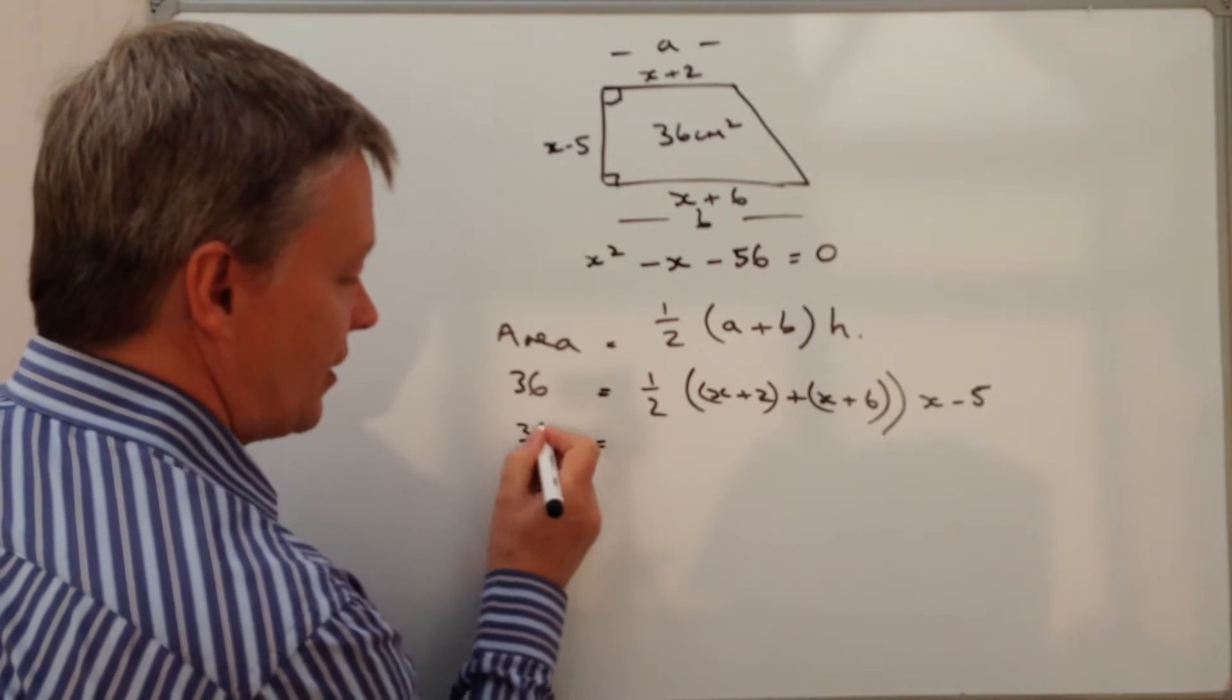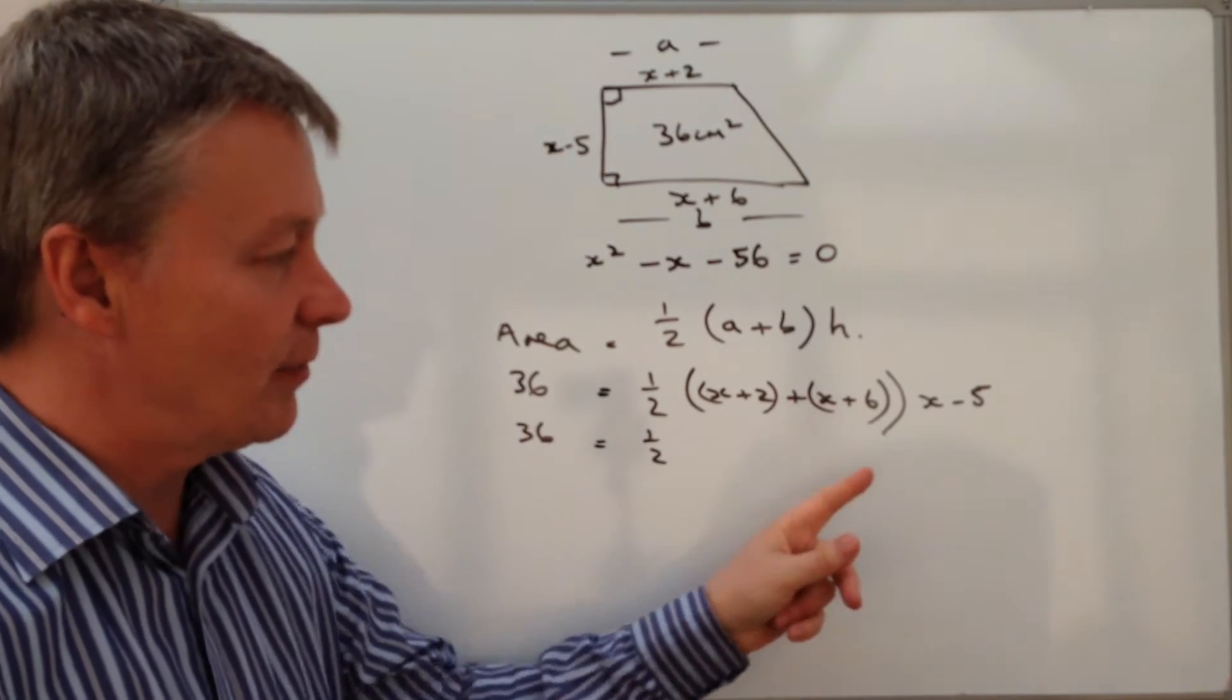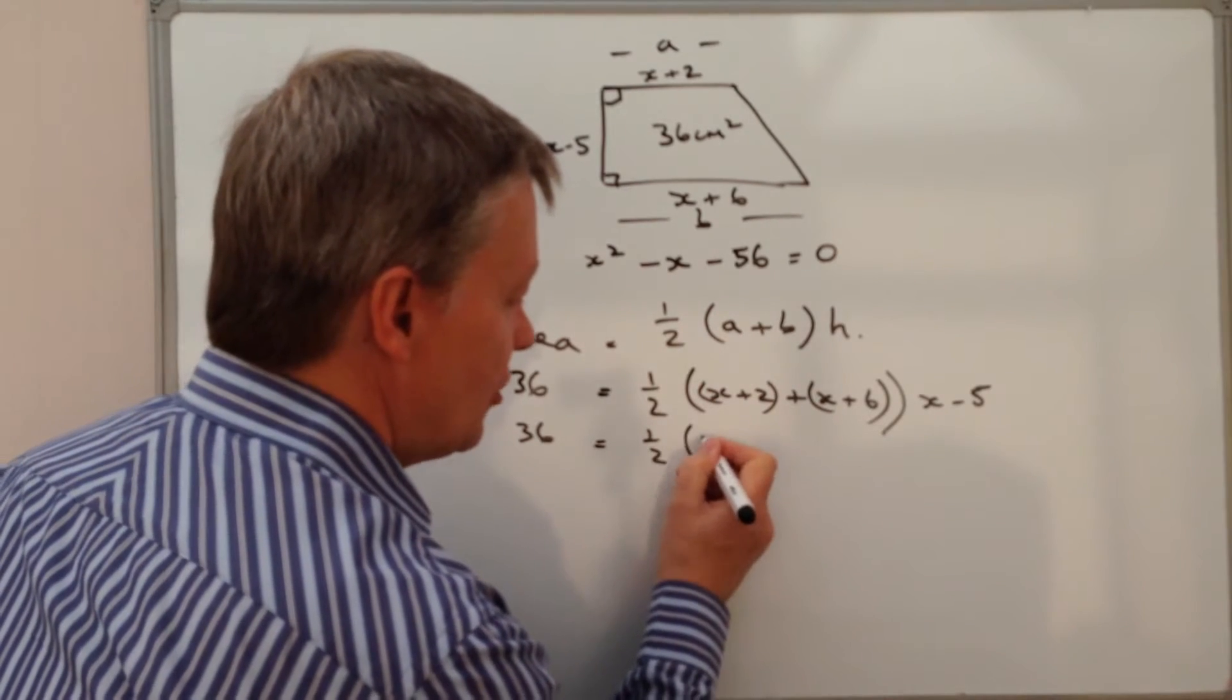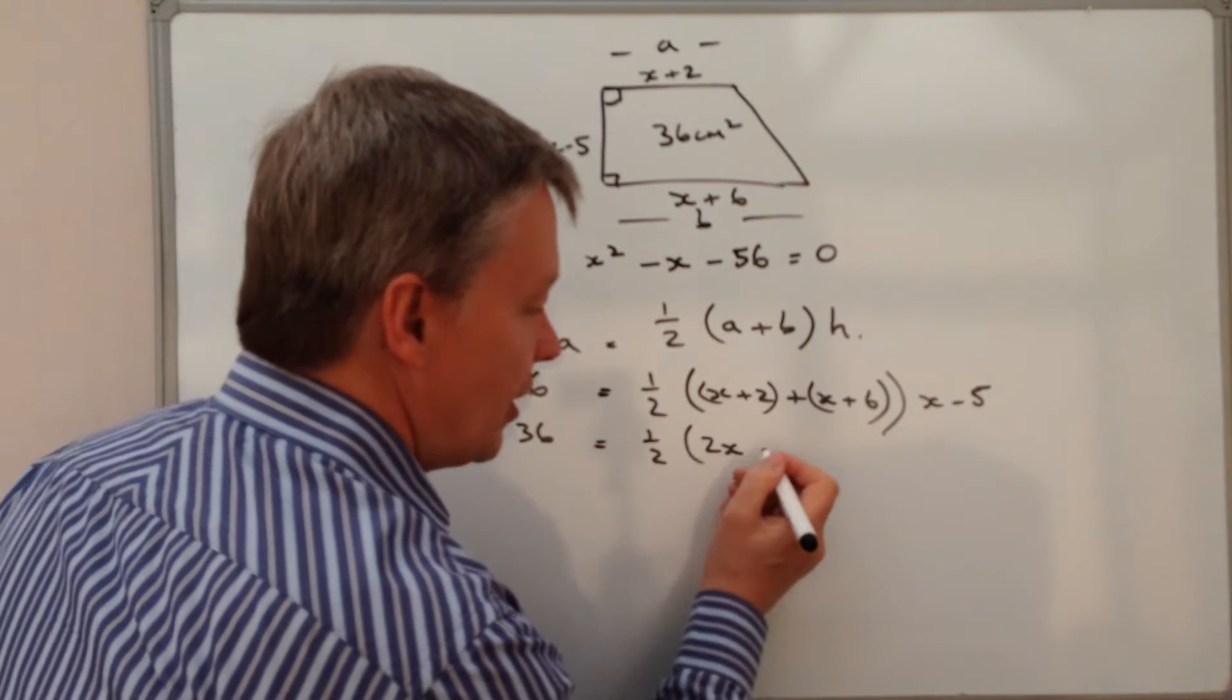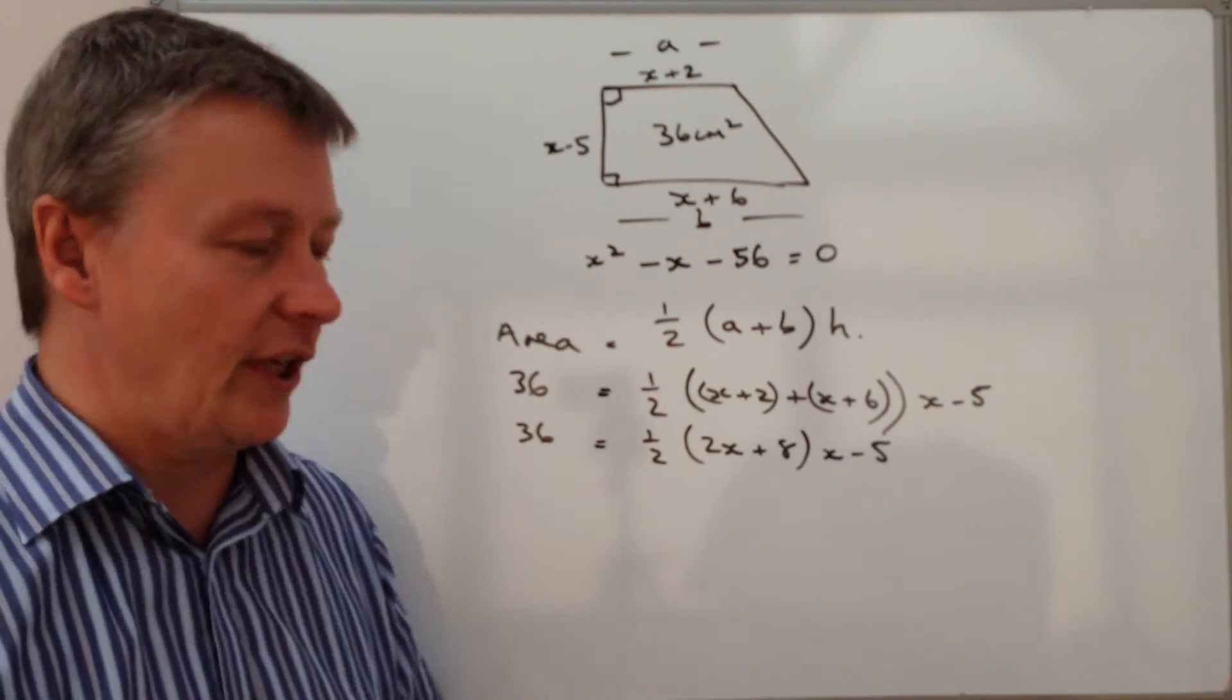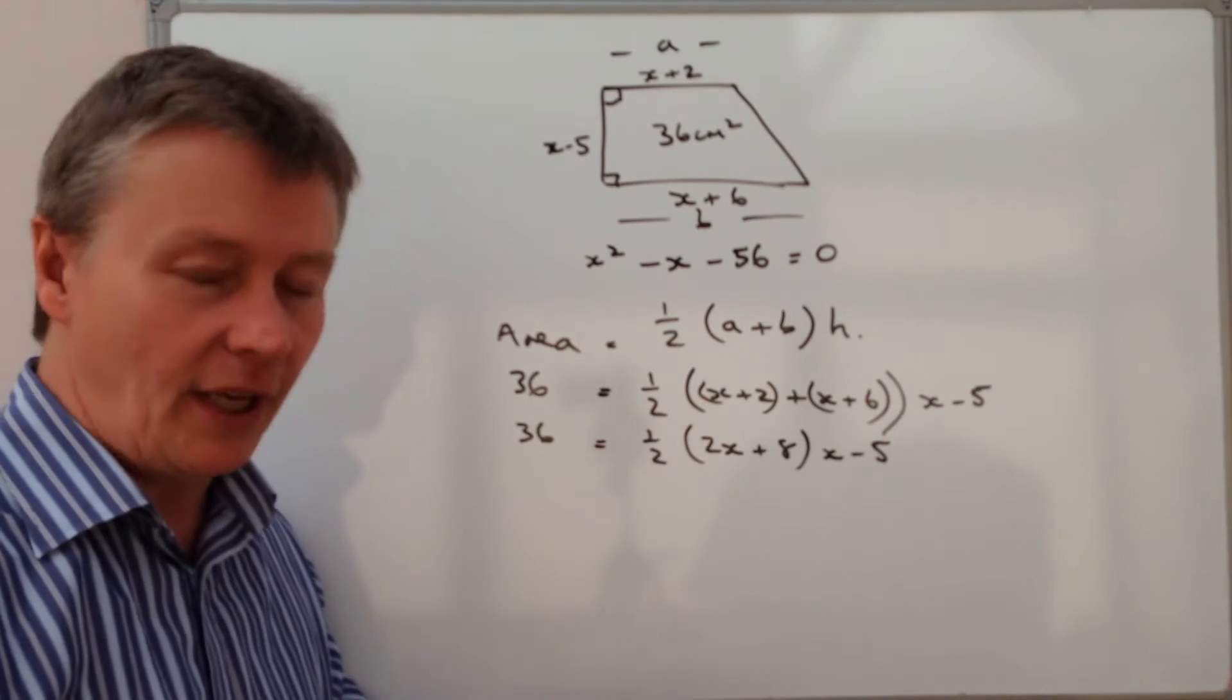So the first thing I'm going to do is clear up what's in the brackets there. I've got 36 still equals one-half, and I've got x plus 2 plus x plus 6. If I remove those brackets, I've got x plus x which is 2x, and I've got 2 plus 6 which is 8, and I'm going to multiply that by x minus 5. So we're a little bit further on.